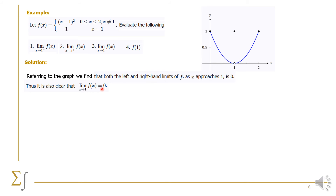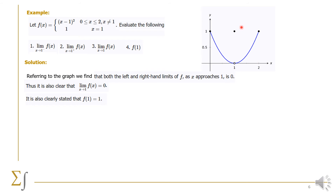Both limits are equal to 0. For part 4, f(1): there is an open circle on the parabola at x equals 1, but by the definition of the function, f(1) is explicitly set to 1. So we have f(1) equal to 1 — either from the graph or directly from the definition.